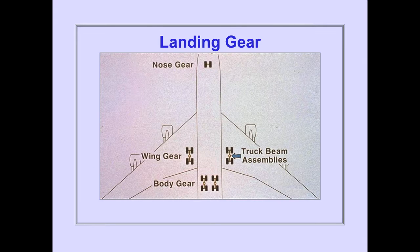The landing gear system consists of one nose gear with two wheels, and two wing gear and two body gear with four wheels each. The wing and body gear are mounted on truck beam assemblies.